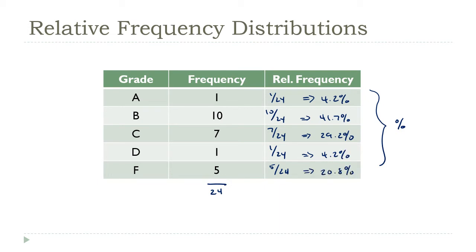10/24 is 41.7%, and 29.2%. We've got 1/24 again, so that's still 4.2%. And 5/24 is 20.8%. Once you have all these totals, you can do a quick check by adding them all up, and you'll get 100.1.